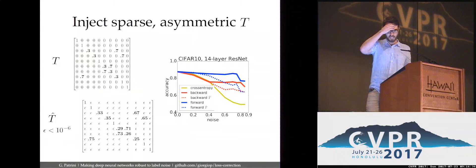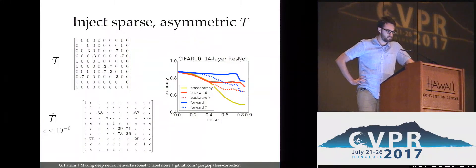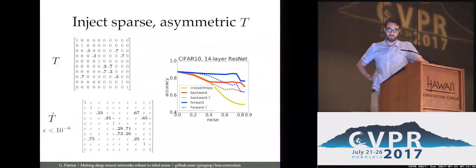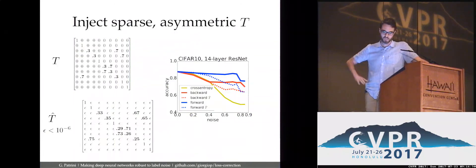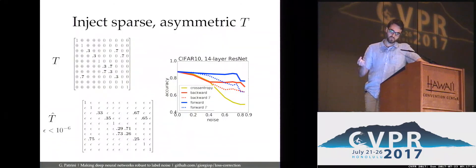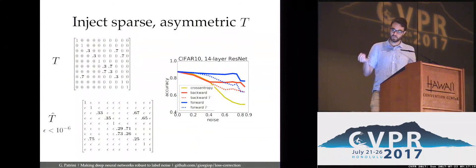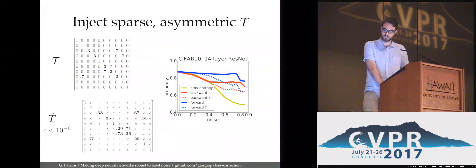For the results: we simulated noise by injecting a structured, sparse, asymmetric transition matrix — very structured noise, not uniform. At the bottom you can see the estimator we obtain from our procedure. For example, on CIFAR-10 with a particular ResNet, as you add more noise, cross-entropy loses performance and is simply not robust to noise at all. With our forward or backward technique, we can actually achieve robustness. In particular, forward works very well in most domains. When we estimate the matrix T ourselves we lose something, but we are still far better than the unrobust cross-entropy baseline.